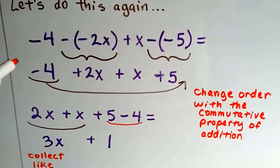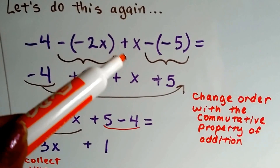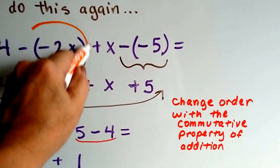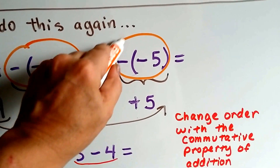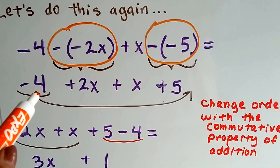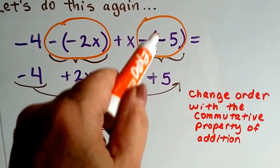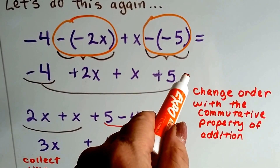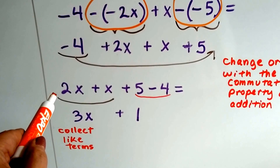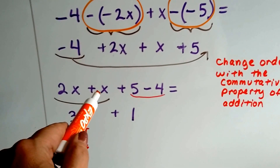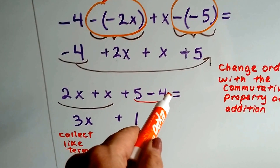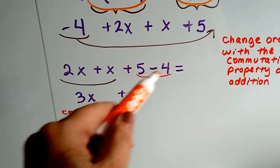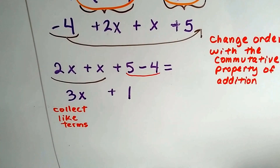We've got negative 4 minus a negative 2x plus x minus a negative 5. I see inverses of inverses here — there's a plus 2x and there's a plus 5. So we've got negative 4 plus 2x plus x plus 5. Using the commutative property of addition, we move the negative 4 to the end: 2x plus x plus 5 minus 4. We combine like terms: 2x plus x is 3x, and 5 take away 4 is 1.